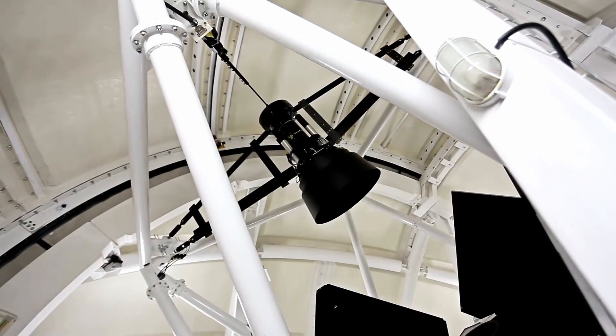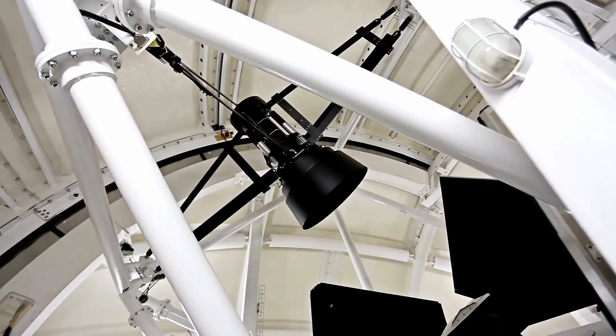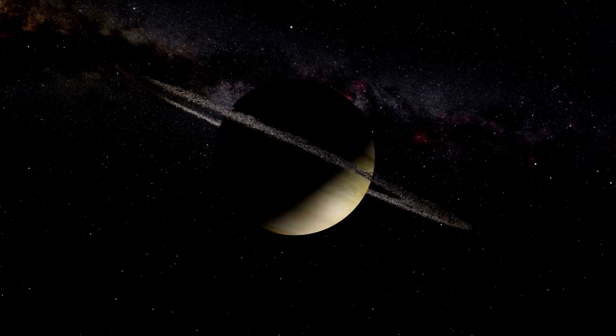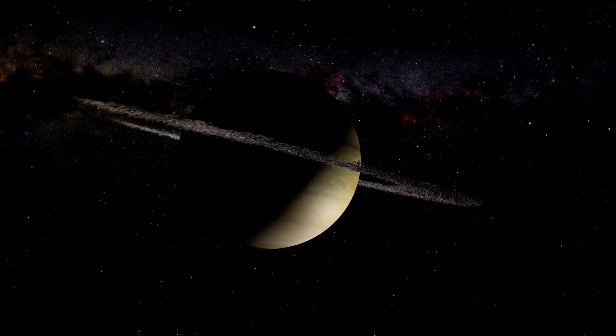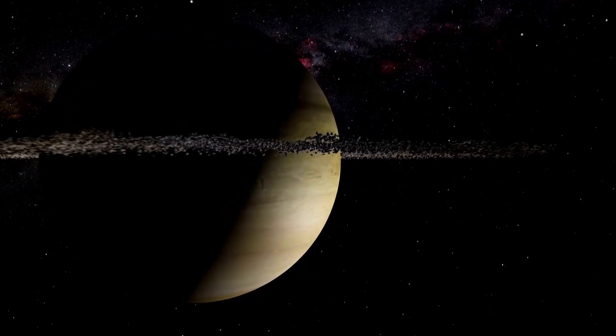Something massive is entering our atmosphere, and it's not an asteroid NASA was expecting. For months, telescopes tracked 3.I Atlas as just another interstellar visitor. But now, as it closes in on Earth, new data reveals it's not what scientists thought.